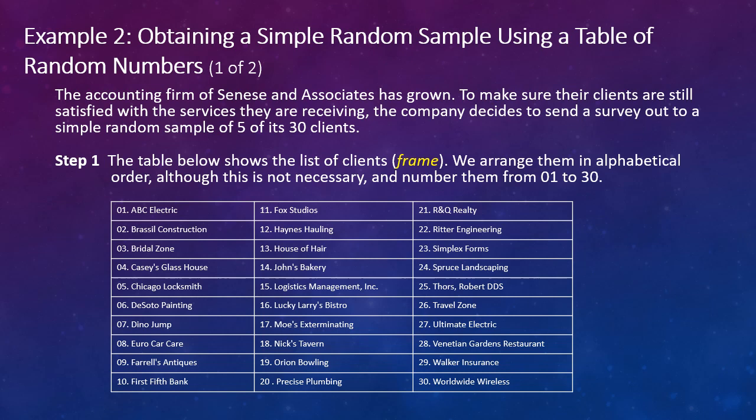Now notice we numbered them from 01 to 30, and that's usually a good idea to have the same number of digits in each number. So if we were in the hundreds, we would probably number from 001 to, you know, 123 or whatever. Okay, so the first part is just to create the frame, which is a list of all of the individuals in the sample—I'm sorry, in the population—and then to number them.